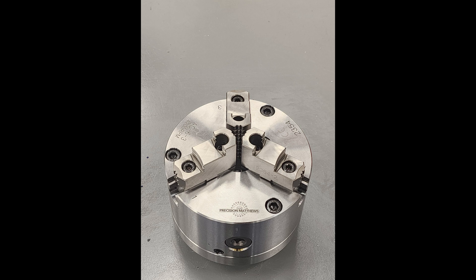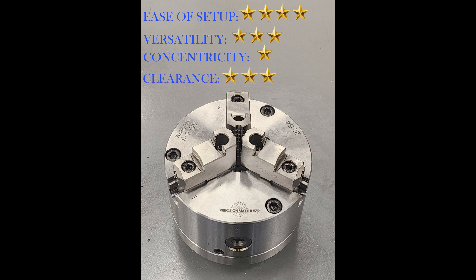I'll rate all these work holding options on four criteria out of five stars, and I'll use the very scientific process of making a number up off the top of my head. So for the three jaw chuck, I'm going to say ease of setup is four out of five stars, because you just put the work piece in and clamp it down. Versatility is going to be three stars, because you can hold round stock with the jaws in the normal position, or flip the jaws around and hold larger round stock. Concentricity is where the three jaw suffers with one star, but we generally use the three jaw chuck on parts that can be cut all in one setup without unclamping the jaws. And clearance for tool access is not bad, I'll give it three stars.